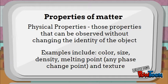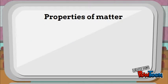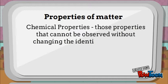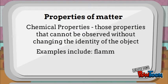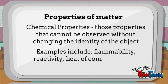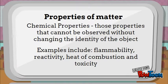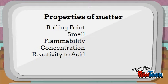Chemical properties are those that cannot be observed without changing the identity of the object. Examples include flammability, reactivity, heat of combustion, and toxicity. For instance, you can't tell if something is flammable without trying to set it on fire — and if it does catch fire, you've changed the identity of the object. The same logic applies to reactivity and toxicity.